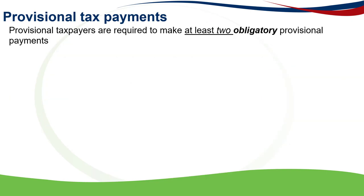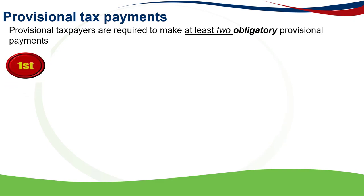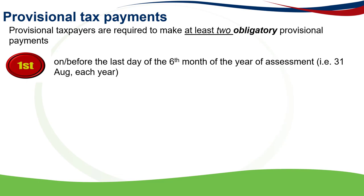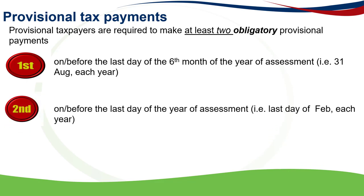There are three possible provisional tax payments. Two of these are obligatory — you are required as a provisional taxpayer to make at least two obligatory payments. The first payment should be made on or before the last day of the sixth month of the year of assessment, and for a natural person that would be on the 31st of August each year. The second payment should be made on or before the last day of the year of assessment, that is on or before the last day of February each year.